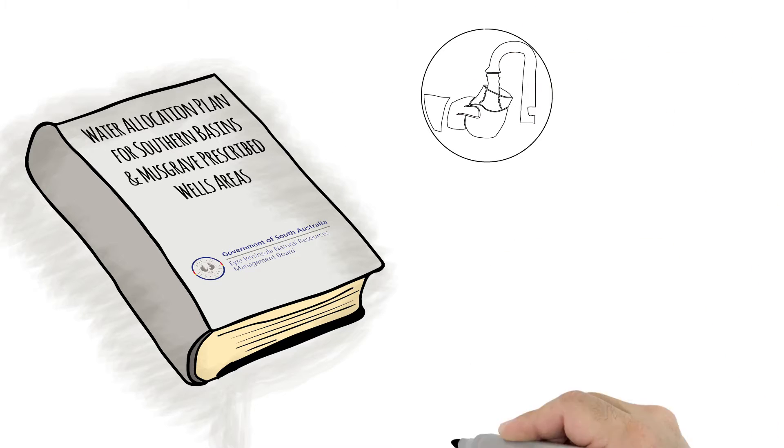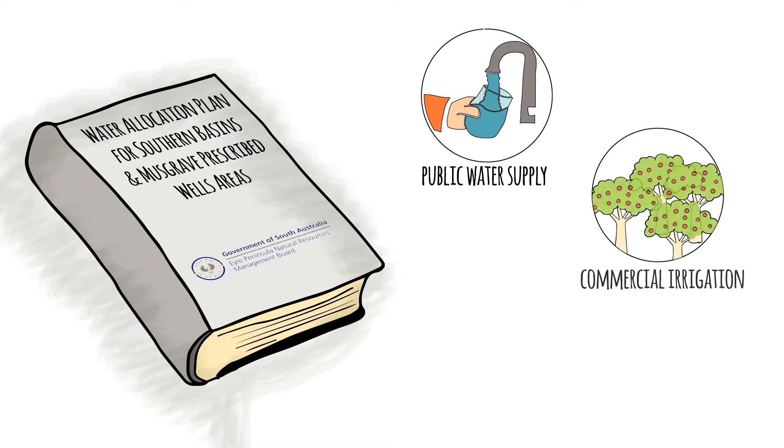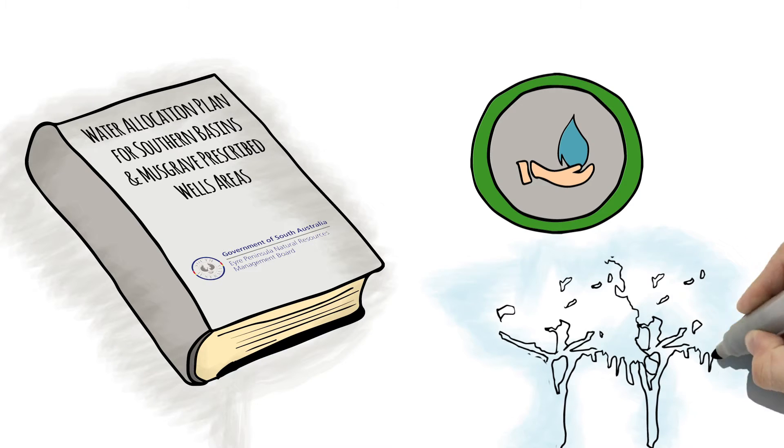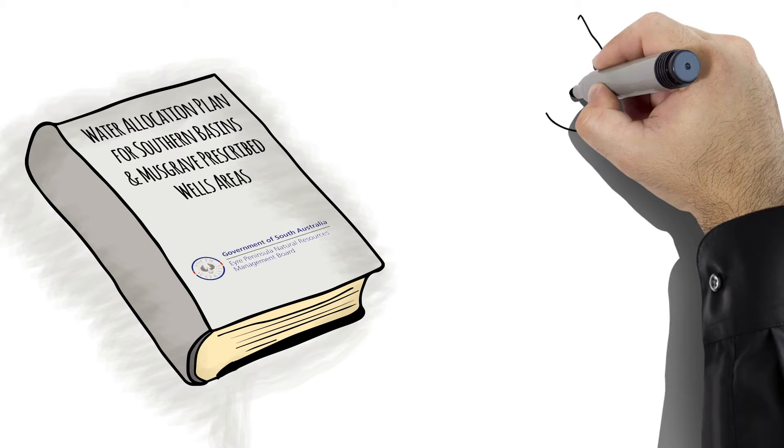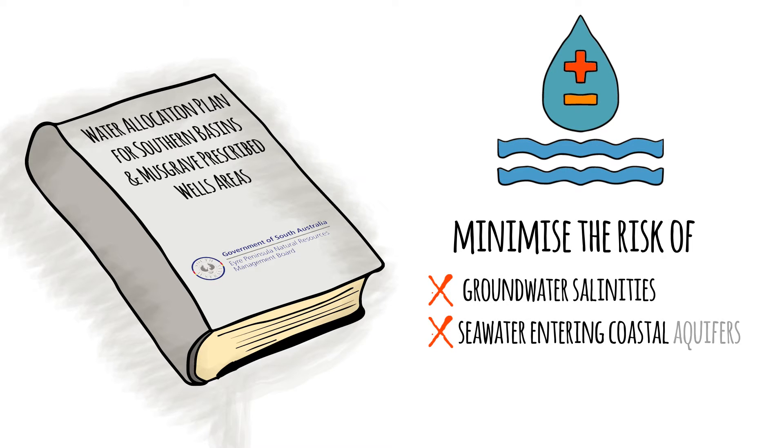The WAP allows for managing the taking and use of water for things such as public water supply, for example drinking water in our homes, commercial irrigation and mining related activities. Importantly, the WAP aims to minimize the impact of water taking on other water resources, groundwater dependent ecosystems and existing groundwater users. The WAP also aims to minimize the risk of increasing groundwater salinities and of seawater entering coastal aquifers.